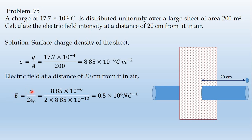The formula is E equals sigma divided by 2 epsilon₀. Substituting the values, the result is 10 to the power minus 6, then 0.58 × 10⁻⁶ Newton per coulomb. That is the answer.